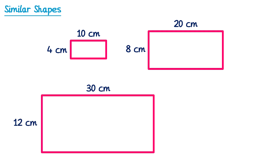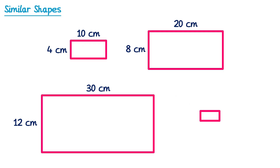So all of these shapes are mathematically similar to each other. When you enlarge a shape it doesn't have to increase in size — it could also decrease. So if we drew a shape where all of the lengths were halved, instead of 10 for the width we would get 5, and instead of 4 for the height we would get 2.